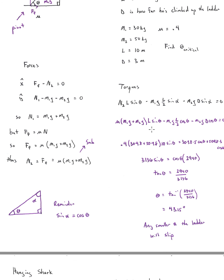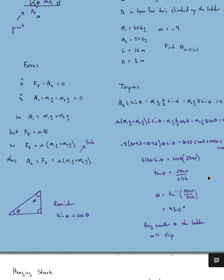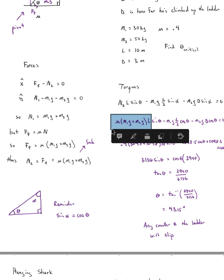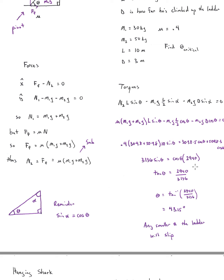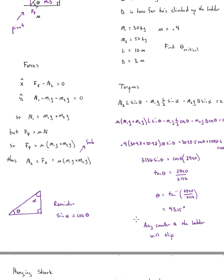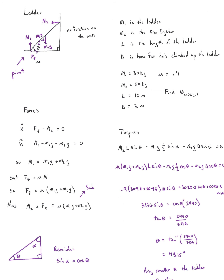The rest is just algebra. Once you reach the torque equation, all the physics is done and it's just math. I collect all terms into a number, move the weight torques to the other side, divide both sides by the numerical coefficient, divide by cosine to get tangent, and then take the inverse tangent to find the angle. That is the critical angle — any smaller and the ladder will slip. Once you know theta, you can find everything else.